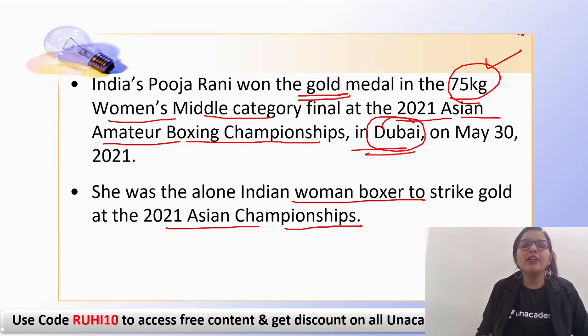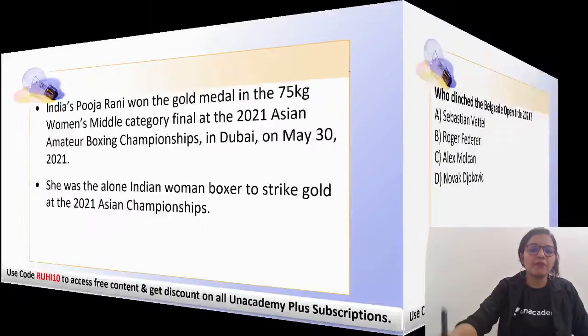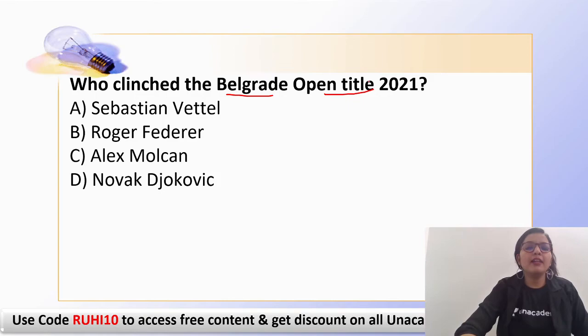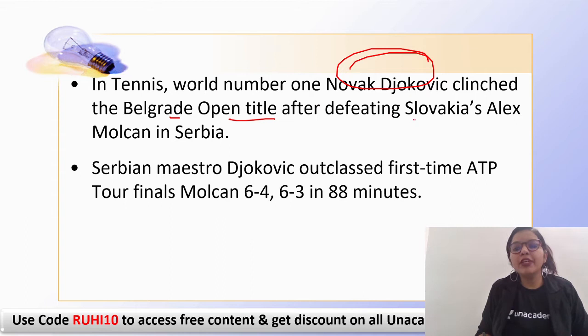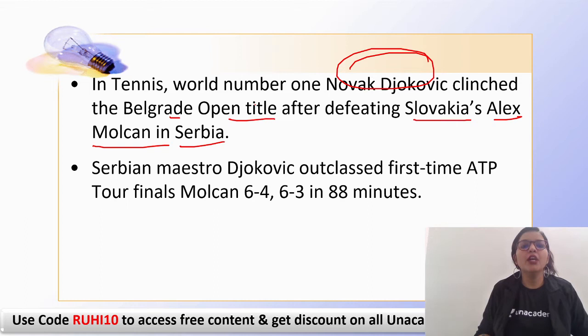The next question is about tennis. World number one Novak Djokovic won the Belgrade Open title after defeating Slovakia's Alex Molcan in Serbia. You should remember that Djokovic won the Belgrade Open title and who he defeated — that is Alex Molcan.